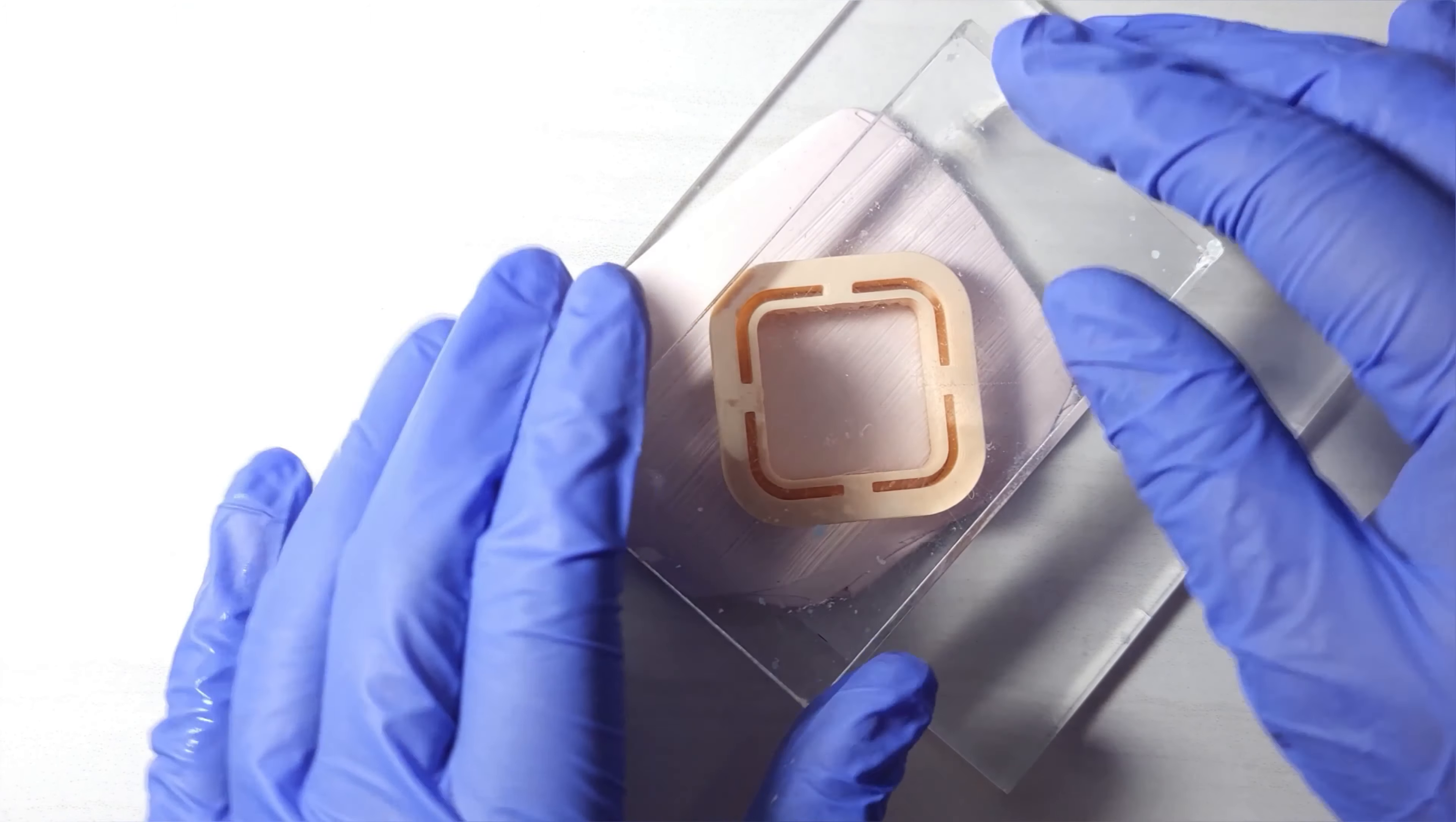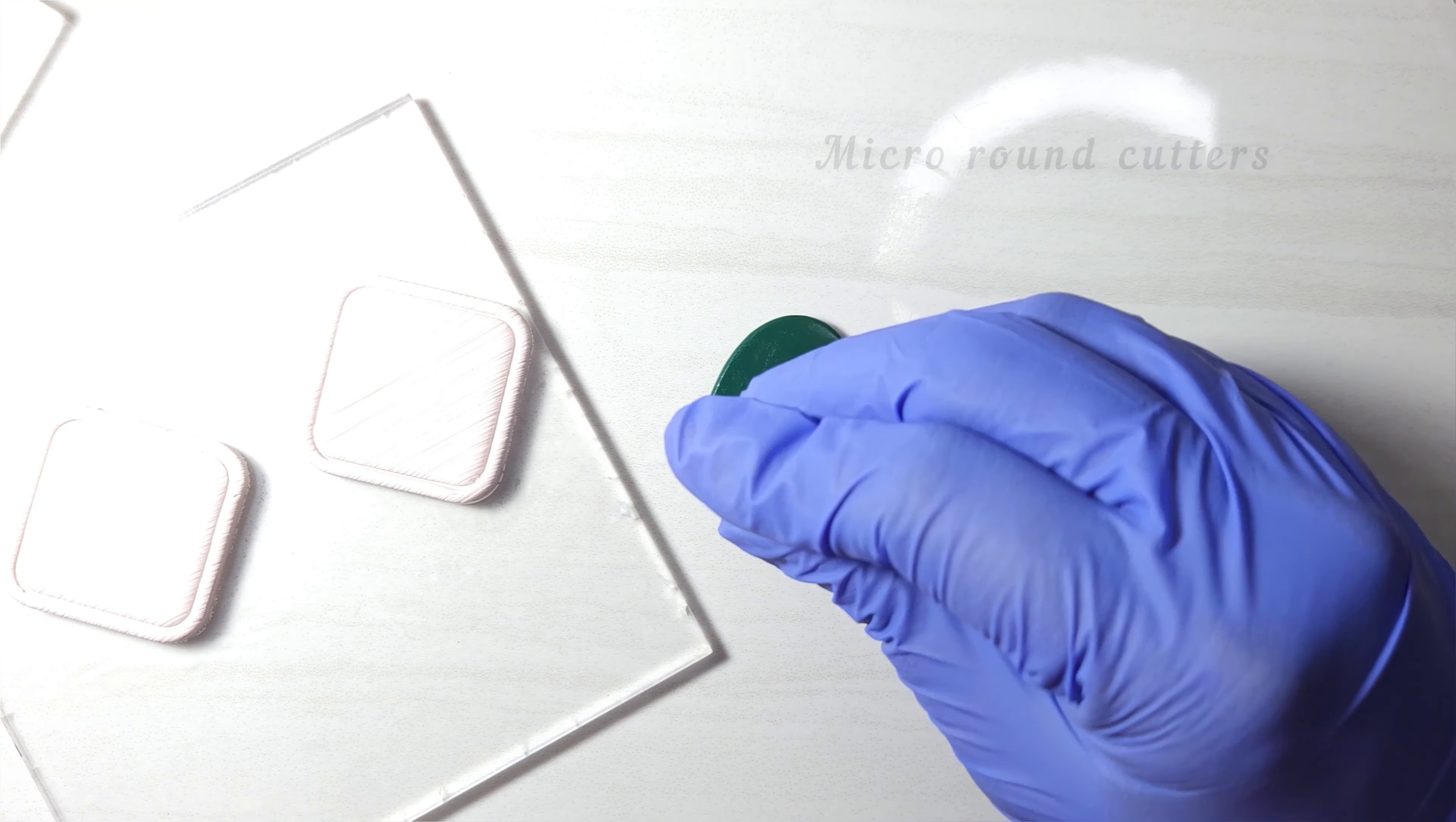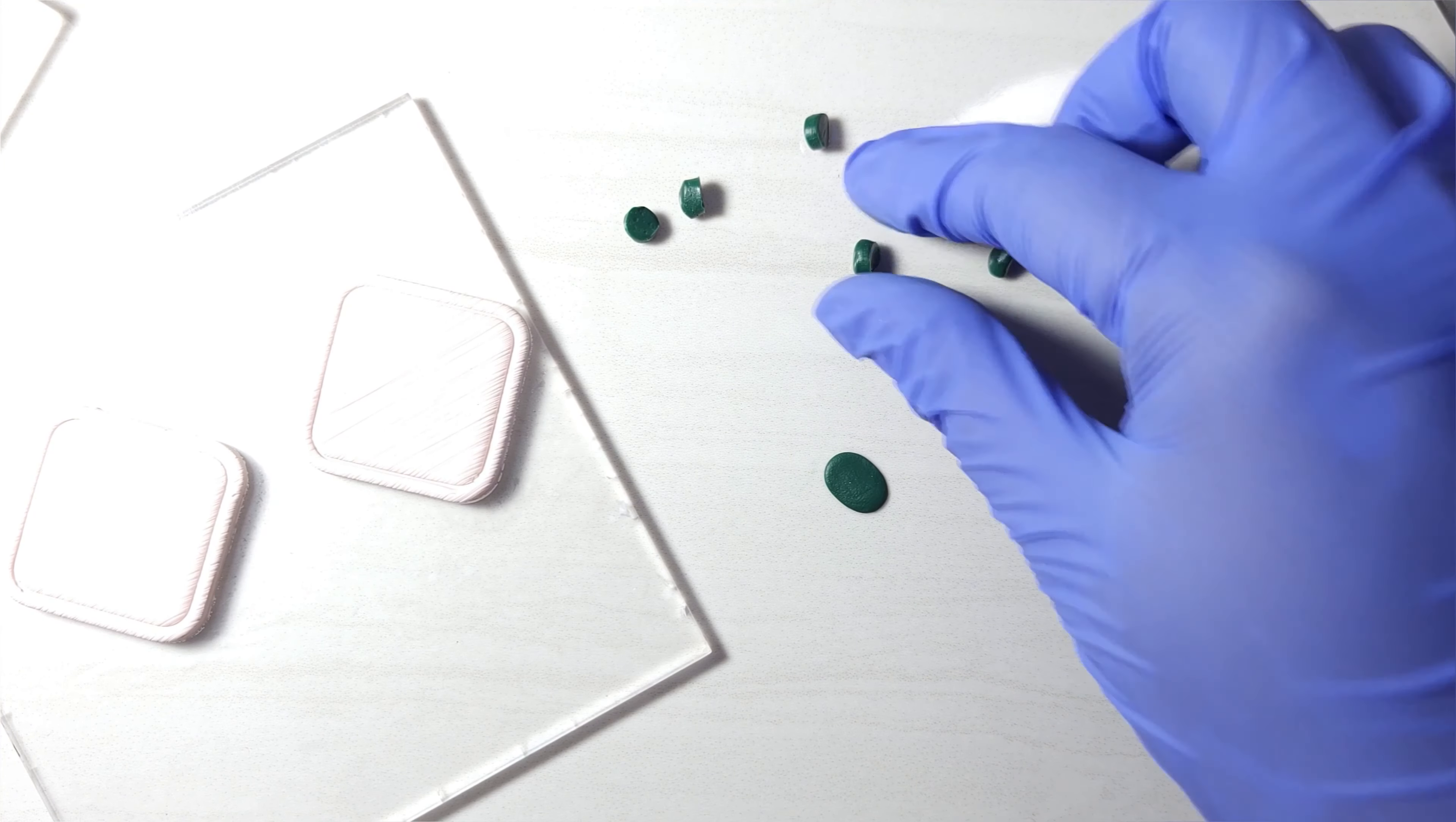Use any framed clay cutters of your choice. Cut some rounds from the dark green clay sheet. Try to make an oval shape from each round.